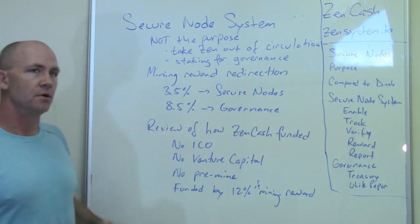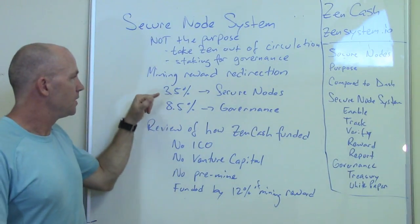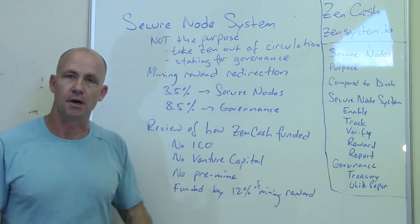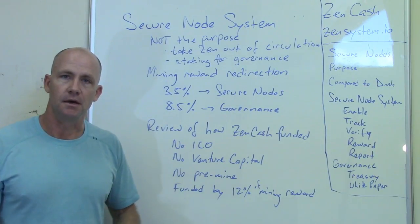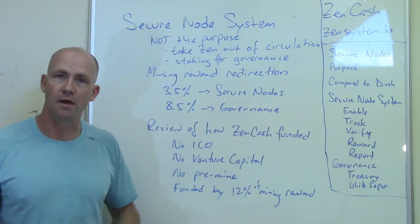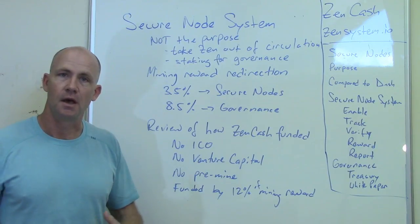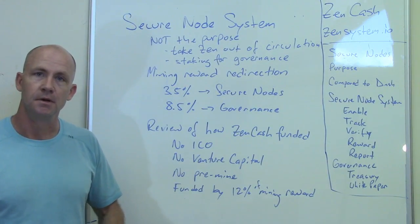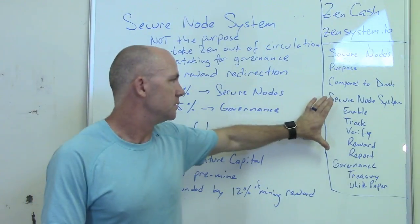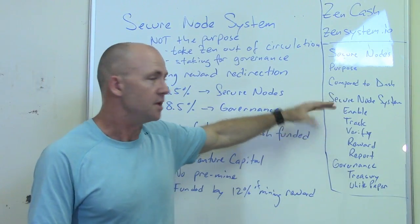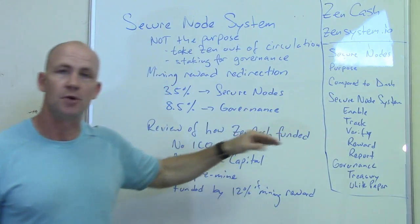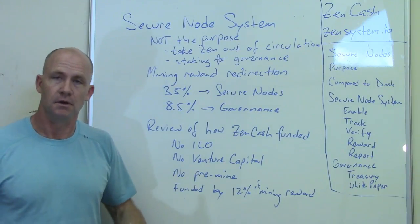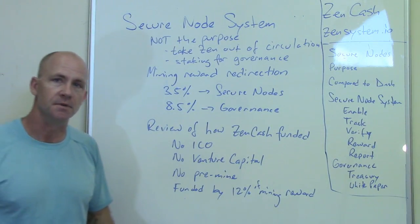The mining reward redirection: 3.5% of it goes to secure nodes. I'll talk in a minute about how the secure nodes qualify for it and how we're going to put together a system to enable that. The secure node system has to enable it, track it, verify it, pay it, and then report on it, as you can imagine such a system would need to do.